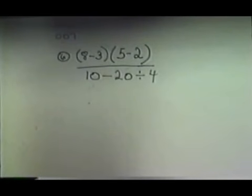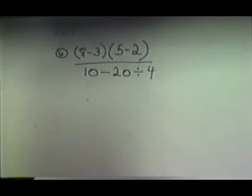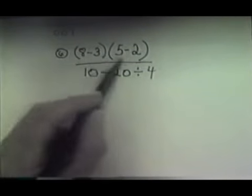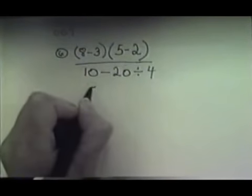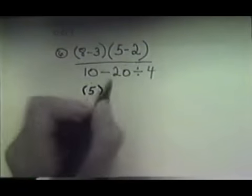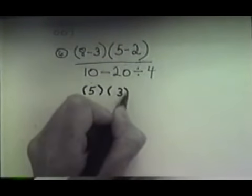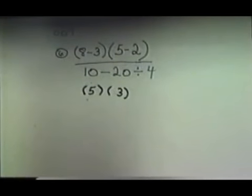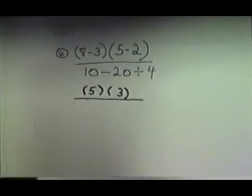And as we work those out, we can kind of work them along together. So let's start with the top. On the top, our rule says to work inside those grouping symbols first. So if we work inside of each grouping symbol, and we really can do them both together, that would give us a 5 and a 3. So I'm working inside the grouping symbols. And when I come down to the bottom here, I have 10 minus 20 divided by 4.